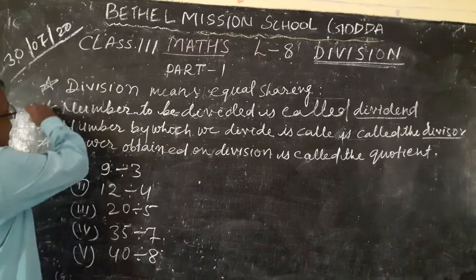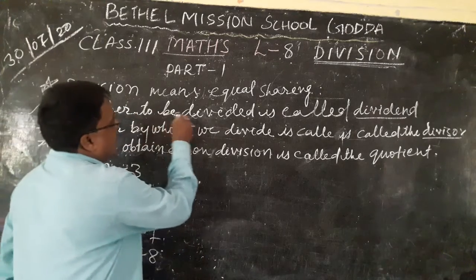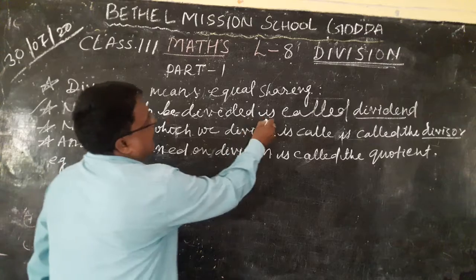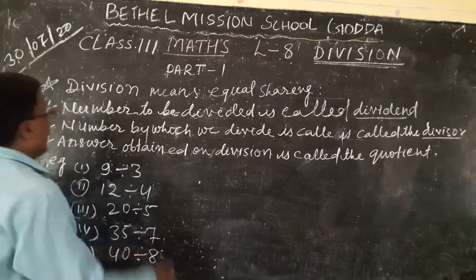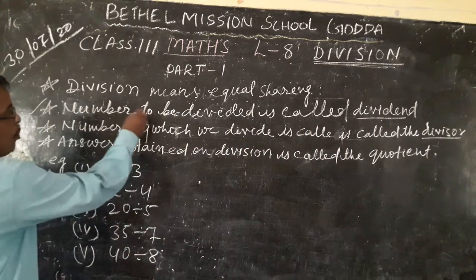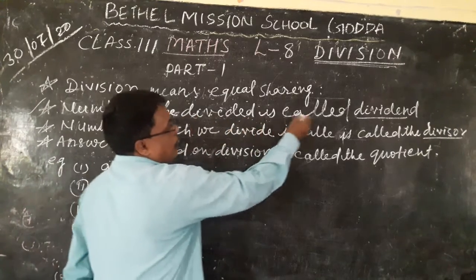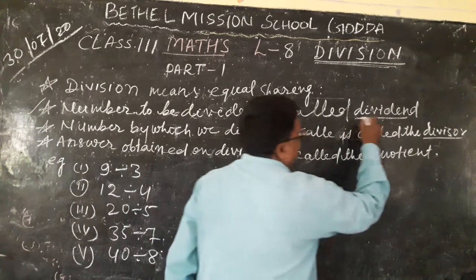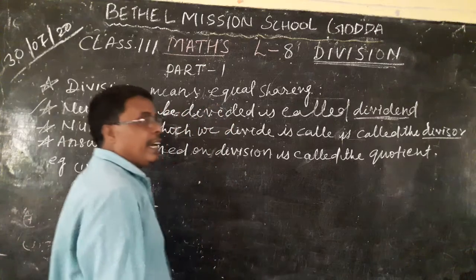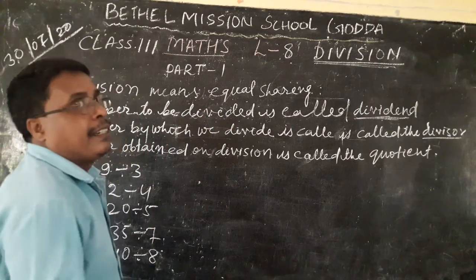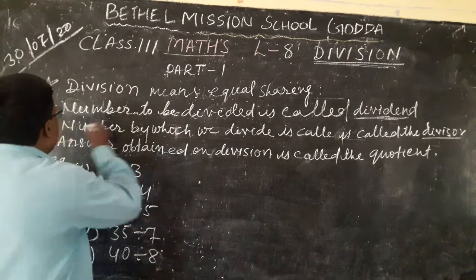Next, the number to be divided is called the dividend. Dividend means which number is being divided. So these are called the dividend.